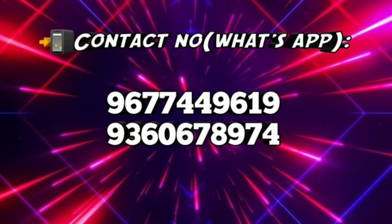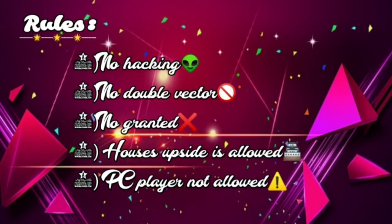For the first rule, no hacking. For the second rule, no double vector. For the third rule, houses and ground are allowed.